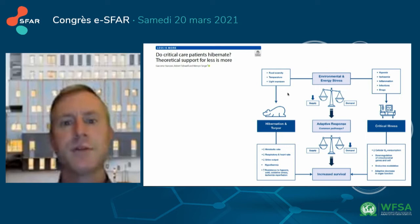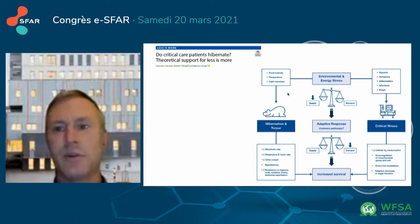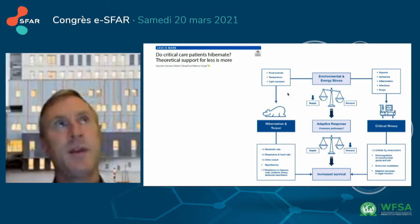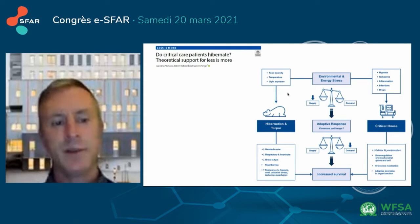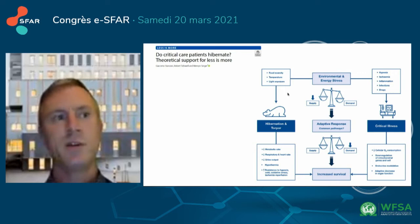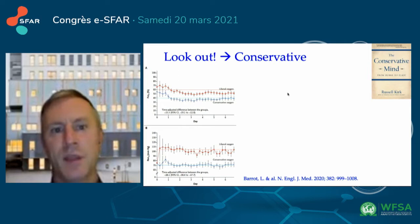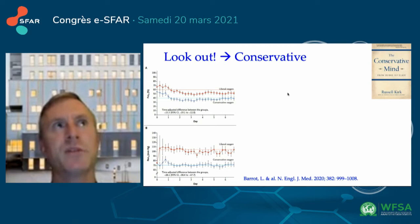There are some similarities between hibernation or torpor and critical illness. These are situations where the body is stressed by different stimuli — infection in sepsis, or food scarcity for torpor. One of the responses from hibernating mammals is a decrease in metabolic rate, and this is also something we see in septic patients. So giving additional and unnecessarily high FiO2 may be equal to arousing the bear, and this can be very dangerous.